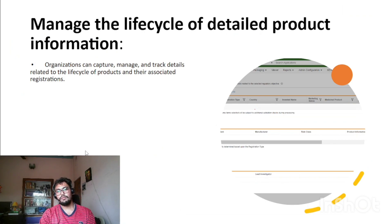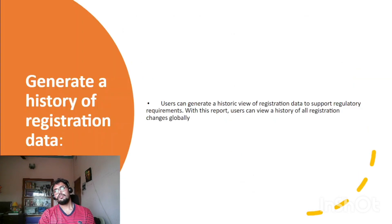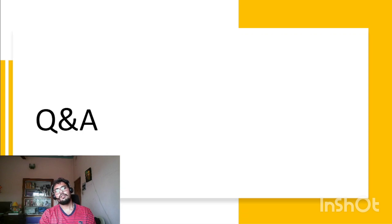Another feature is managing the lifecycle of detailed product information: organizations can capture, manage, and track details related to the lifecycle of a product and its associated registrations. Additionally, users can generate a historic view of registration data to understand the full audit trail of a registration record — what changes happened during the lifecycle. This supports regulatory requirements, and users can view a history of all registration changes globally.